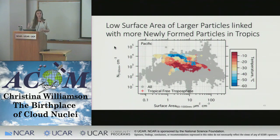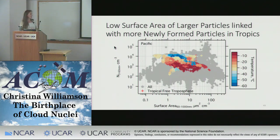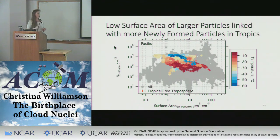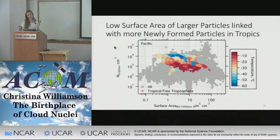Looking at the relationship between surface area of large particles and number concentration of newly formed particles — just showing the Pacific data — the tropical free troposphere shows a relationship whereby lower surface area is coincident with higher number concentrations of newly formed particles. I've colored the data by temperature, because temperature is really important: if it's colder, it's easier to make new particles, and you can see that temperature variation explains some of the spread in that data.